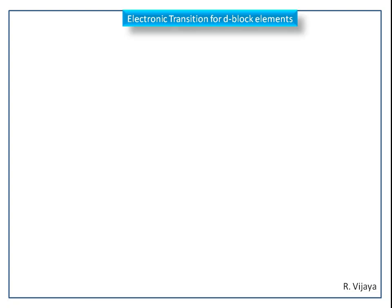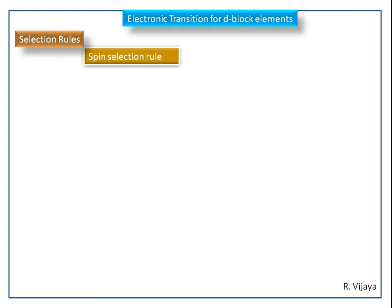In this video, we discuss electronic transitions for D-block elements. The selection rules for these electronic transitions are the spin selection rule and the Laporte selection rule.